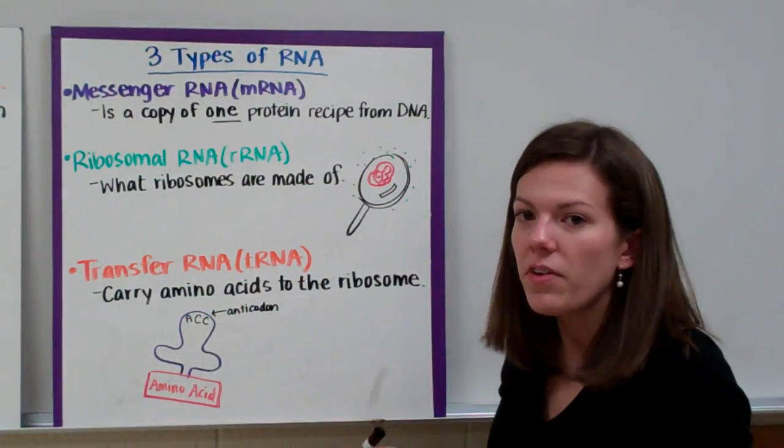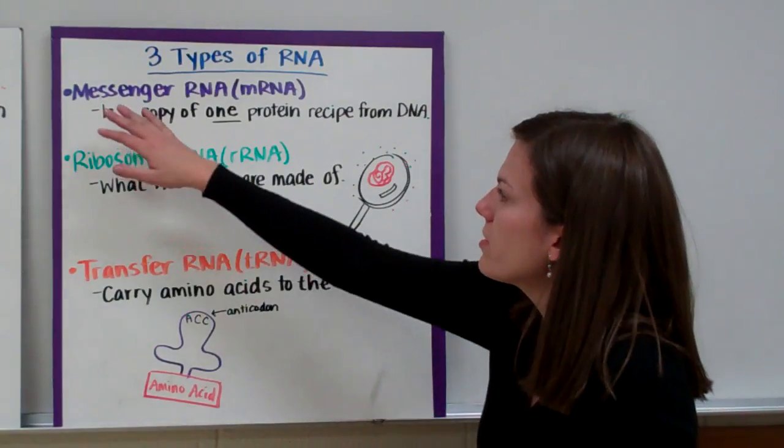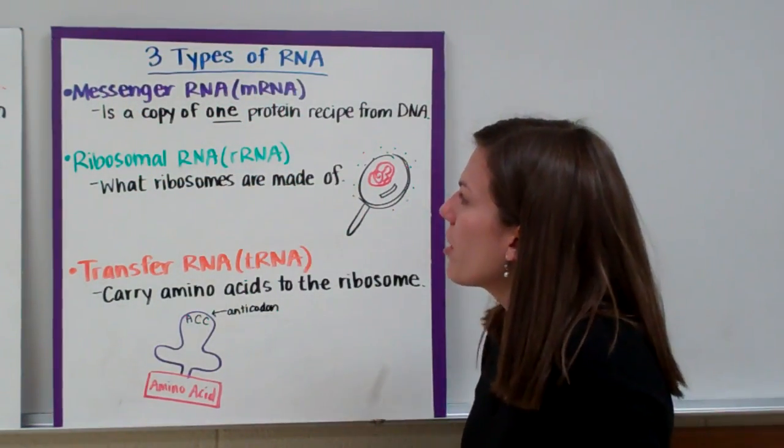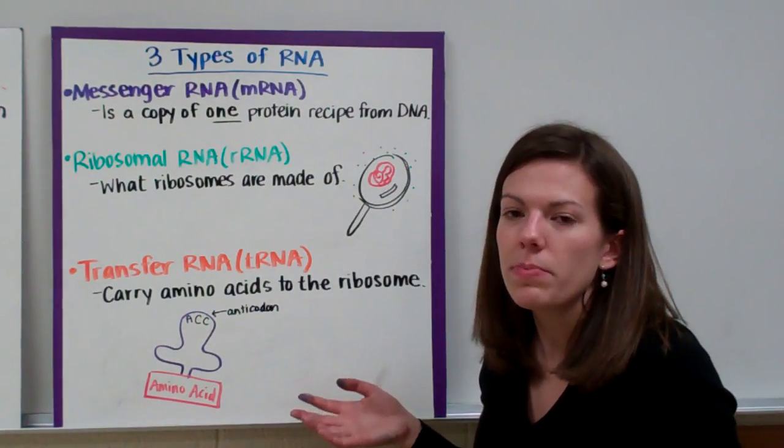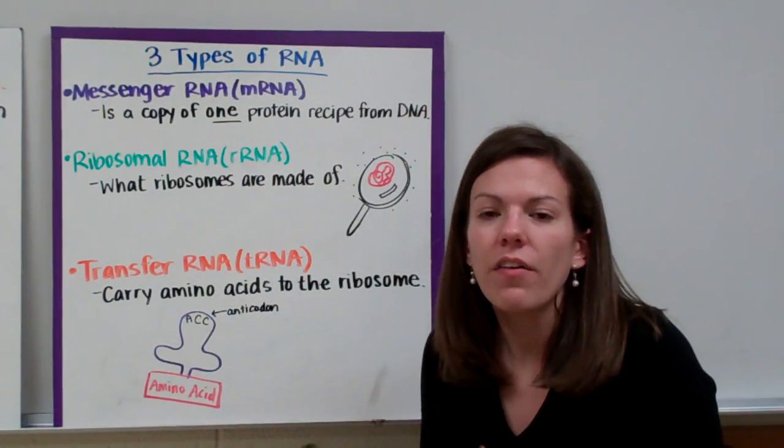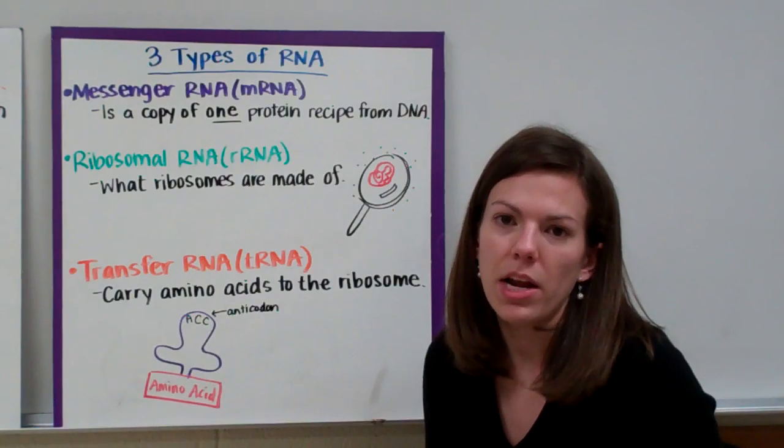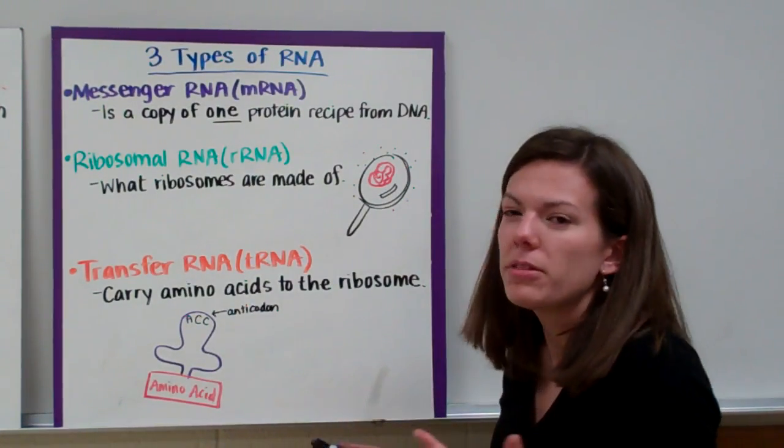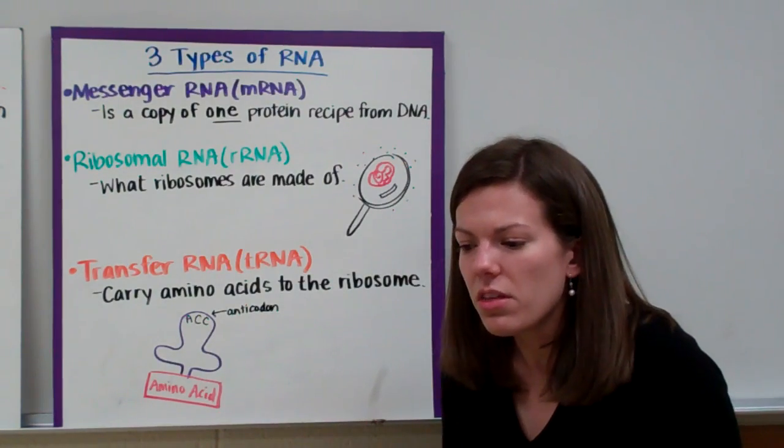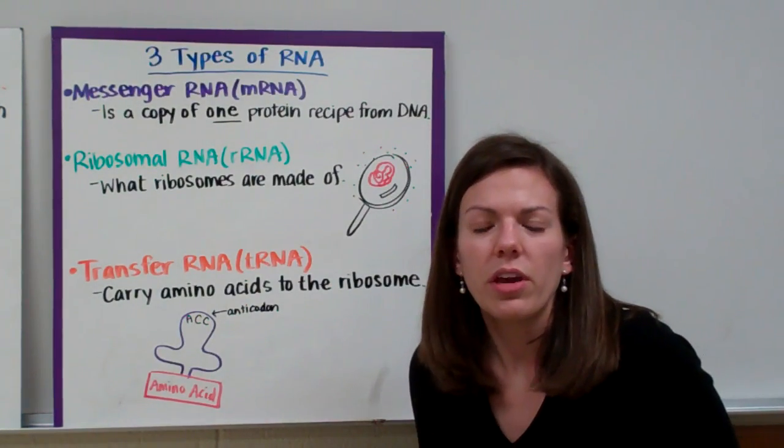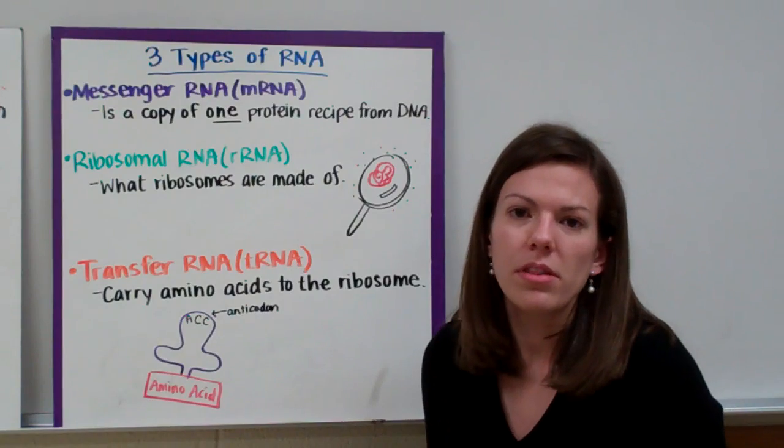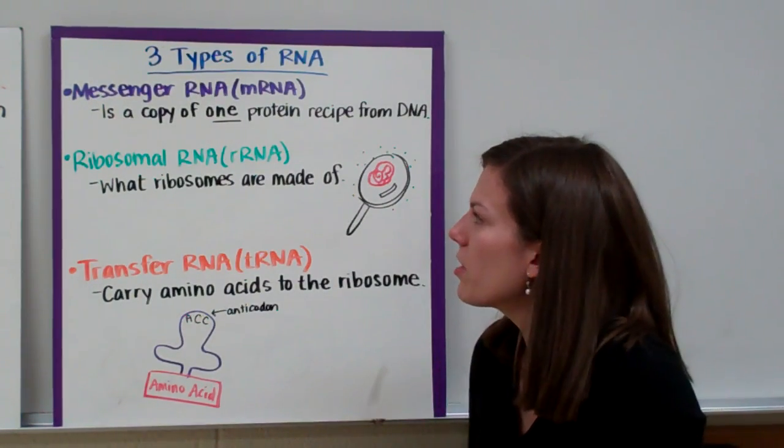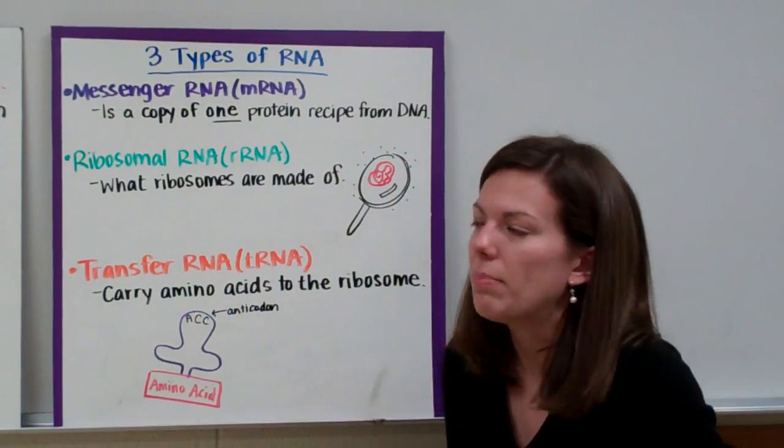There are three types of RNA that you need to know about. The first is messenger RNA, abbreviated as mRNA. Messenger RNA is a copy of one protein recipe from DNA. Now DNA has all the recipes for all the proteins your body ever needs to make, like keratin, insulin, hemoglobin. But if you wanted to get a recipe from a friend, you wouldn't copy their entire recipe book. You would only copy one of those recipes. And you can think of mRNA kind of like that one recipe that you would copy.